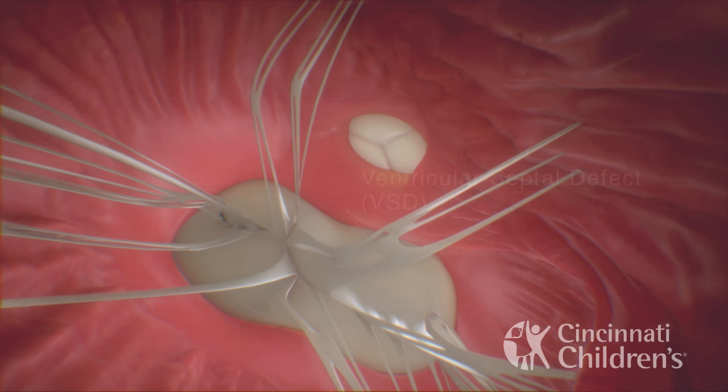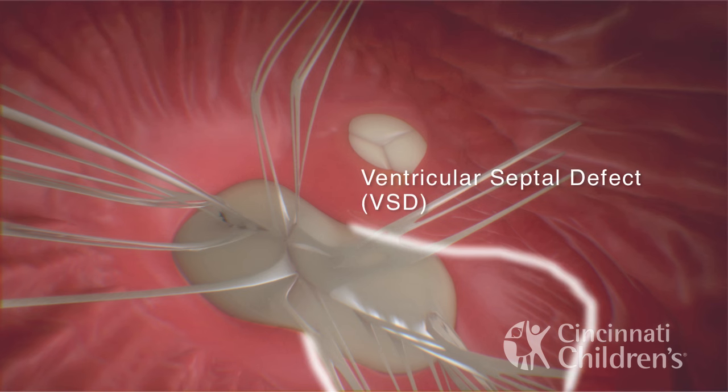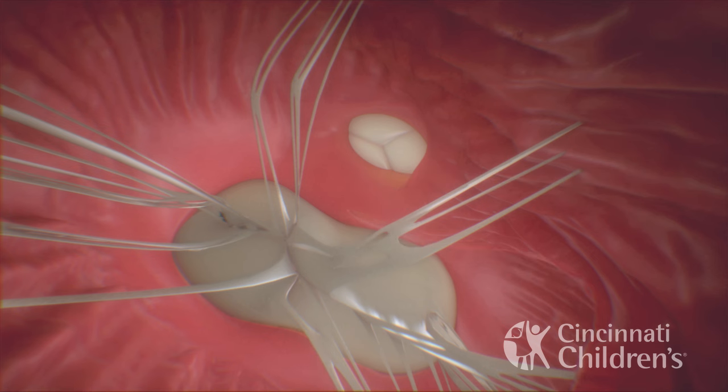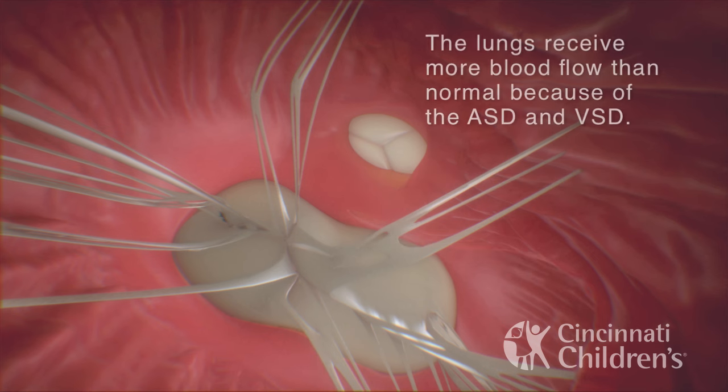This is a ventricular septal defect, commonly referred to as a VSD. The lungs receive more blood flow than normal because of the ASD and VSD.